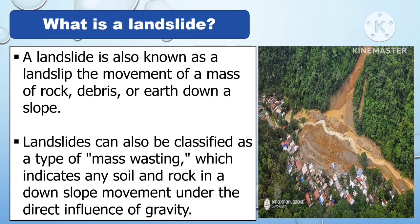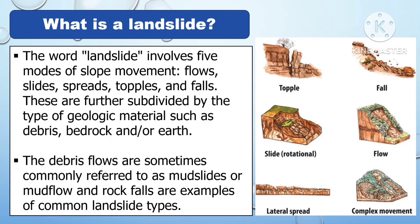What is a landslide? A landslide is also known as a landslip — the movement of the mass of rock, debris, or earth down a slope. Landslide can also be classified as a type of mass wasting, which indicates any soil and rocks in a downslope movement under the direct influence of gravity.